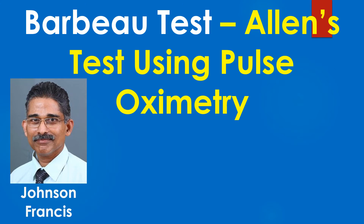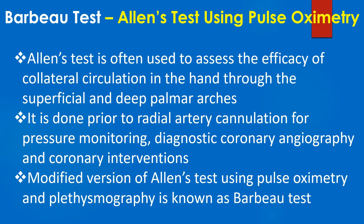This topic will discuss the Barbo test, a modification of Allen's test using pulse oximetry instead of observing the color of the hand. Allen's test is often used to assess the efficacy of collateral circulation in the hand through the superficial and deep palmar arches. It is done prior to radial artery cannulation for pressure monitoring, diagnostic coronary angiography, and coronary interventions.